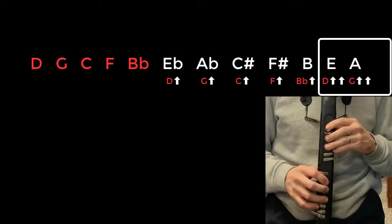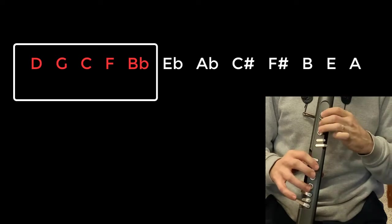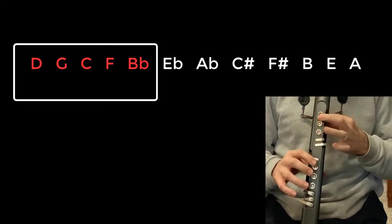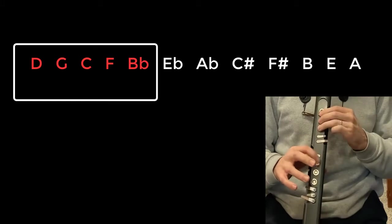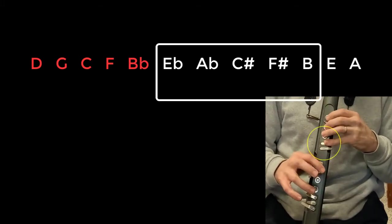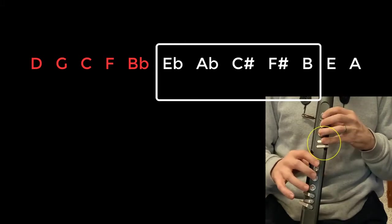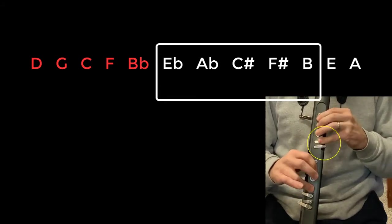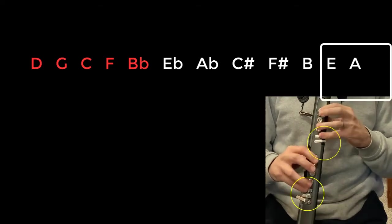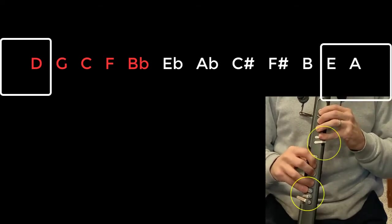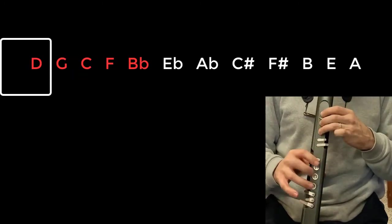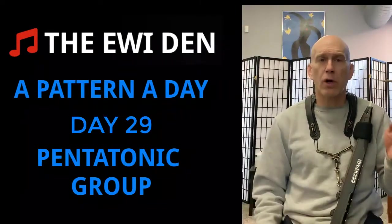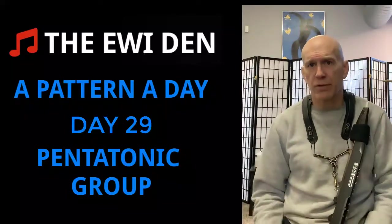I'm going to do all those in a row. Here we go. [plays through all scales] I'm playing the circle of fourths, starting on D and using the pentatonic group as a transpositional vehicle.